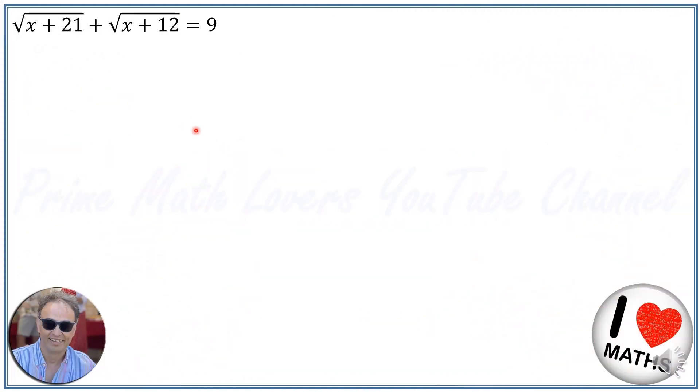I apply the substitution method to solve this equation. I let m equal square root of x plus 21, and n equal square root of x plus 12. So the first part I let it m and the second part is n, and it means m plus n equals 9.